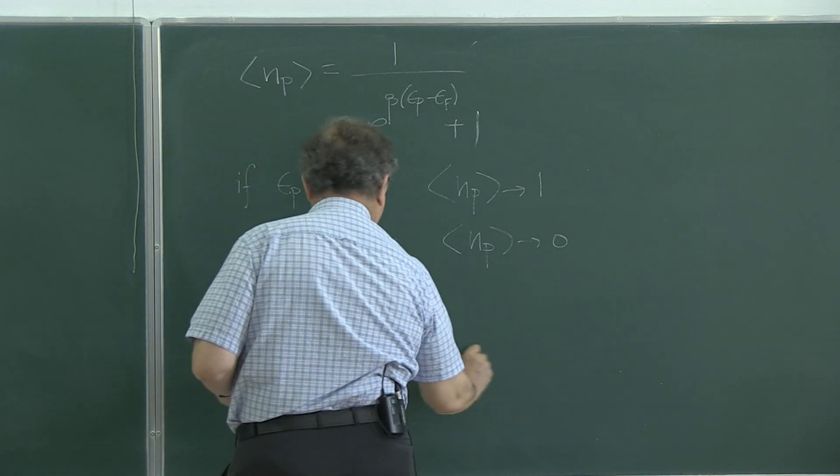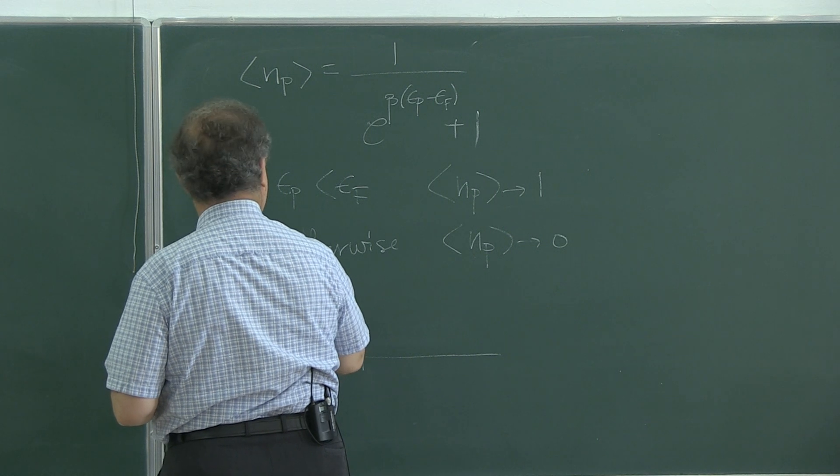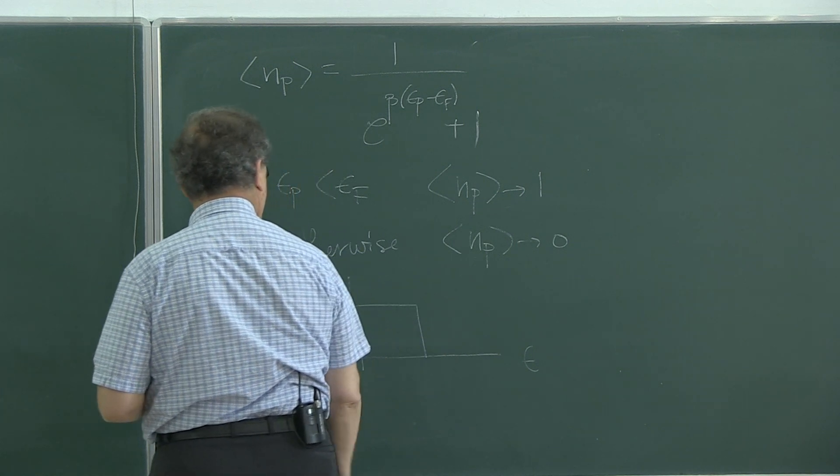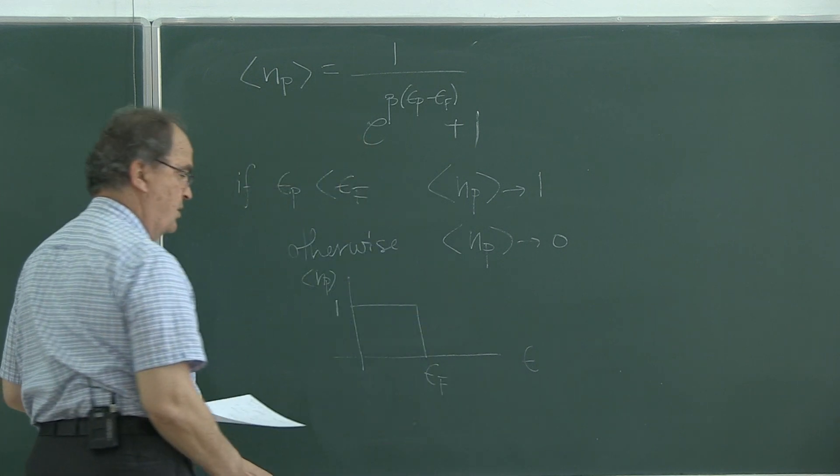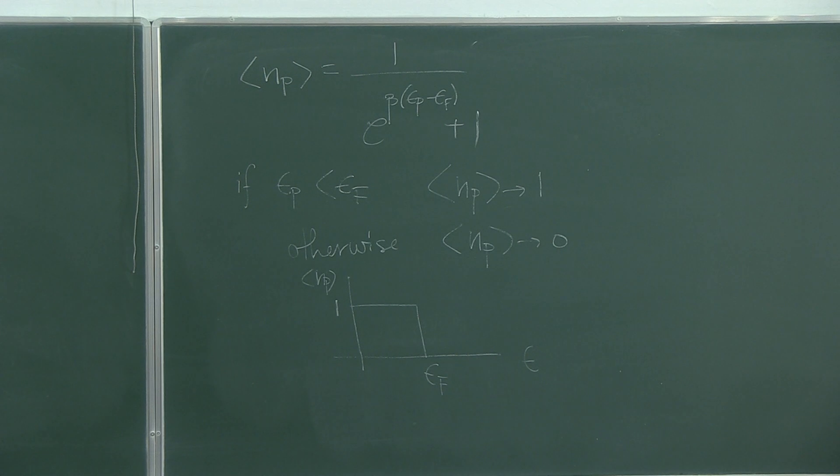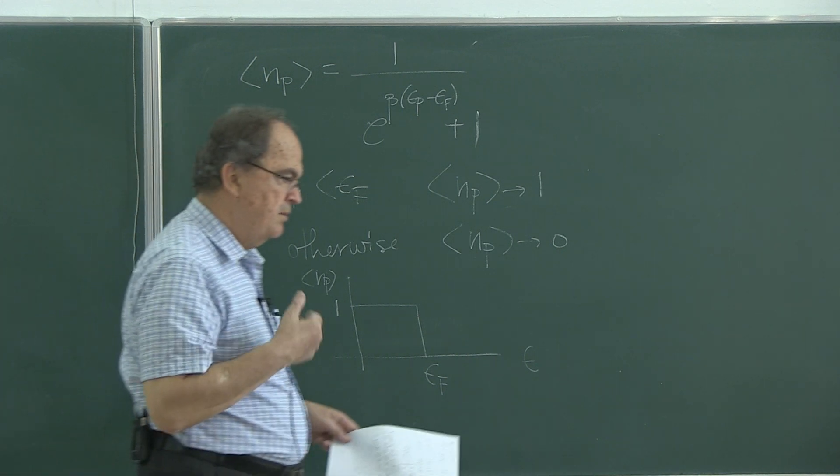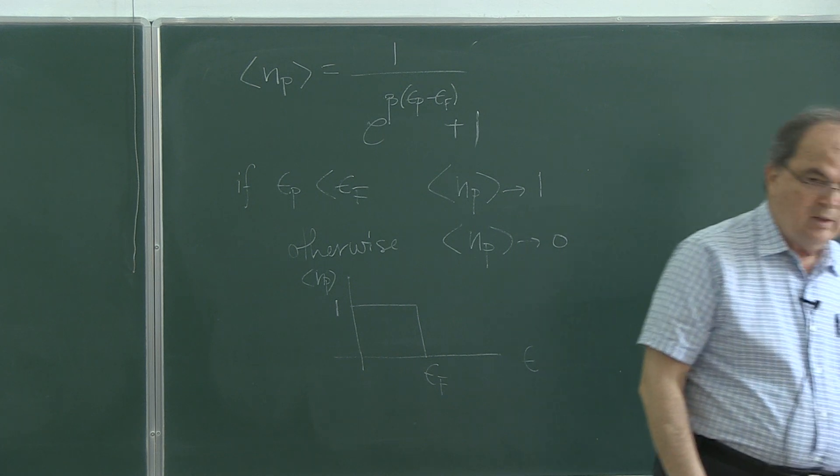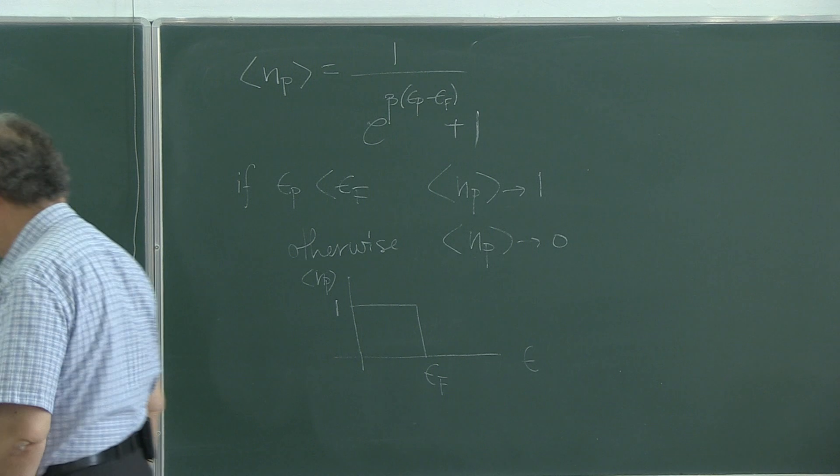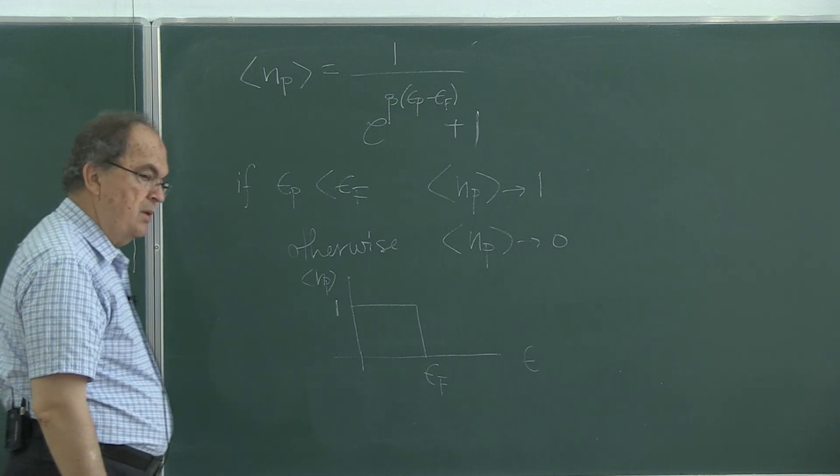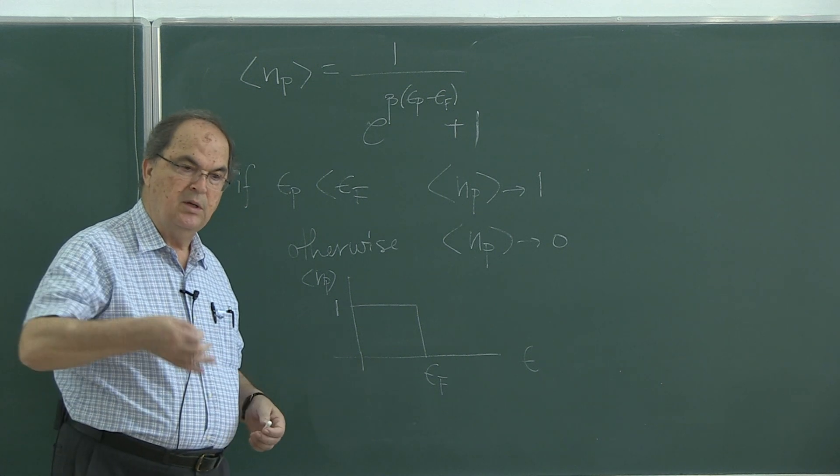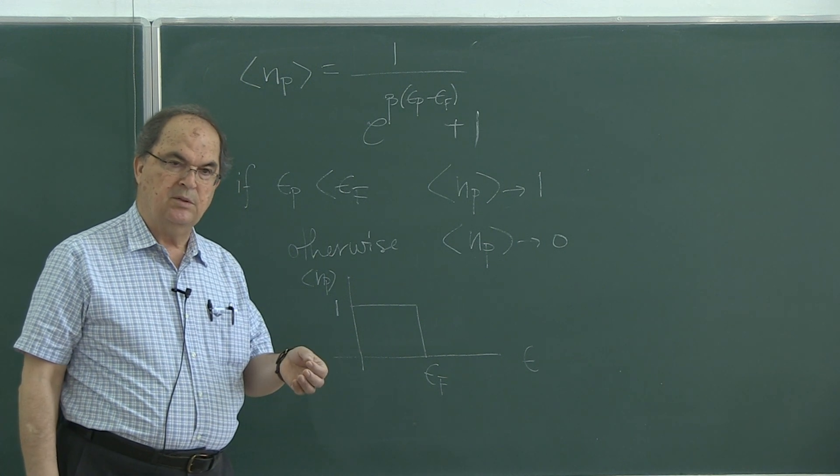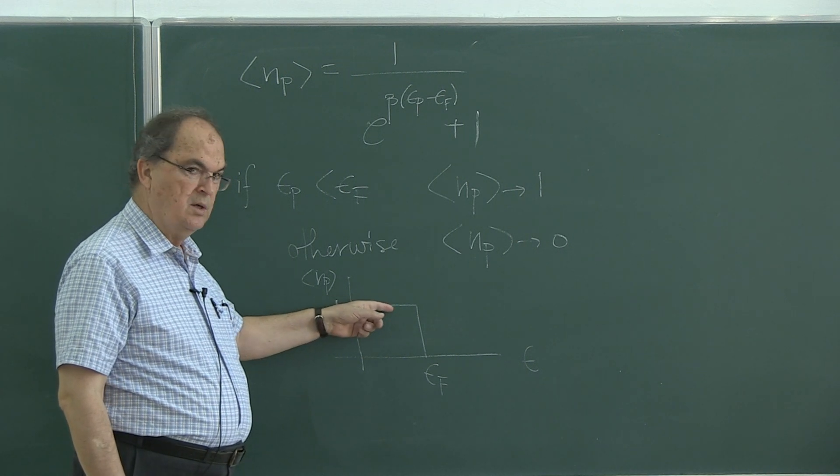So, if you look at it from a graphical point of view, as a function of energy, it is all 1 below Fermi energy, 0 above. So, this behavior of the occupation number, the average occupation number of Fermi-Dirac distribution function, is showing the fact that you start putting electrons or fermions into available states, at most one particle per state, you fill all the states up to Fermi energy.